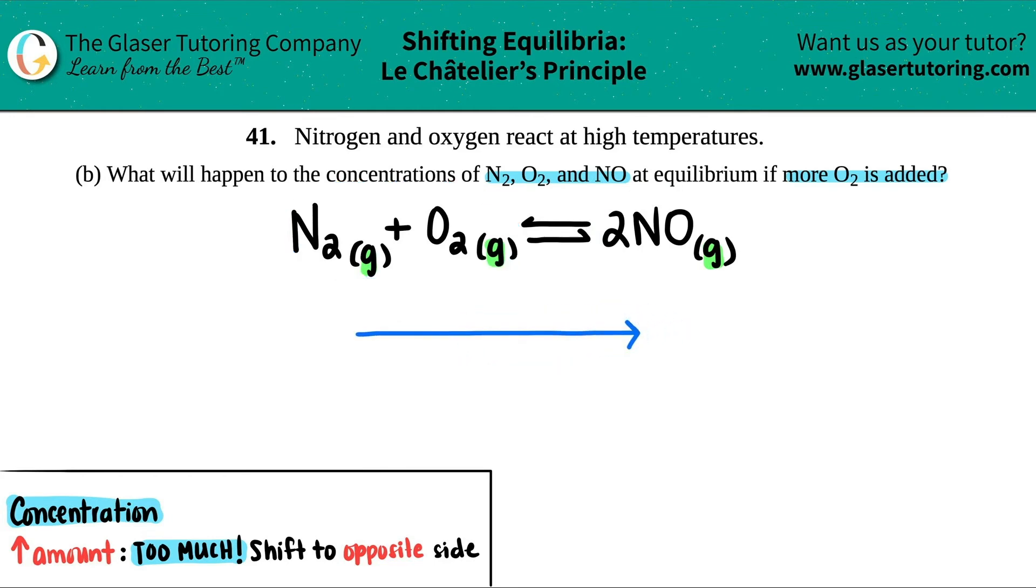So the NO will increase. And since these are both gases and they're both reactants, these will decrease. And now you have your answer. So the concentration, you could just put this in brackets, the concentration of N2 would decrease. The concentration of O2 would decrease. And then the concentration of NO would increase.